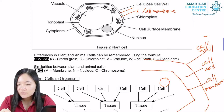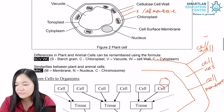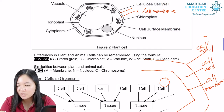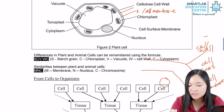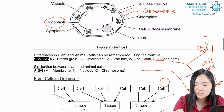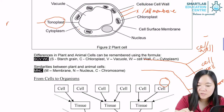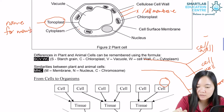So there's the cell surface membrane. Then we have the centrioles, a smaller structure as compared to the nucleus. Then we have the cytoplasm — the space inside the cell surface membrane. Then we have the tonoplasm. Tonoplasm is basically the name for the membrane of the vacuole.